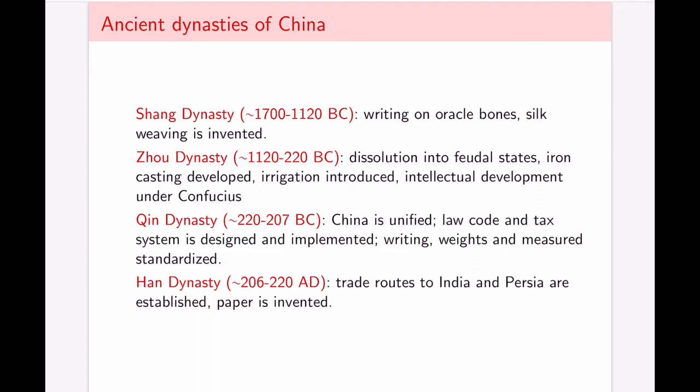Zhou Dynasty coming up next and lasting for a long time, we see the dissolution into feudal states and various developments such as iron casting, irrigation, and intellectual development under Confucius. Qin Dynasty did not last very long, but this is when China was unified, and as a result, a system of law and tax was developed and implemented, which also meant that there was standardization in writing and weights and measurements.